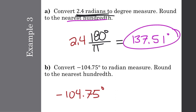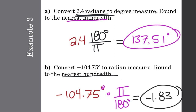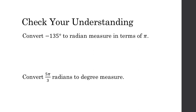Going the other direction: if we have a degree measure, we multiply by pi over 180 and type it all into the calculator. We get roughly negative 1.83 when we round it. Go ahead and try the practice problems — you should get negative 3 pi over 4 and 300 degrees.